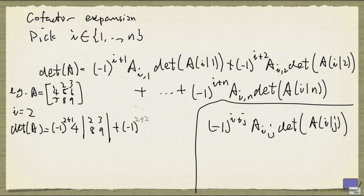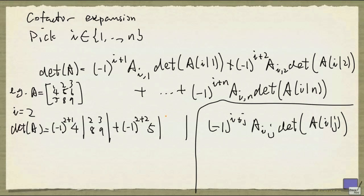Now the next one is (-1)^(2+2) times A_22, that's 5, and multiply by the determinant of the matrix obtained from A by removing row 2 and column 2. That's 1, 3, 7, 9.